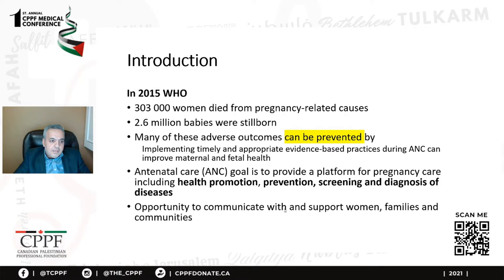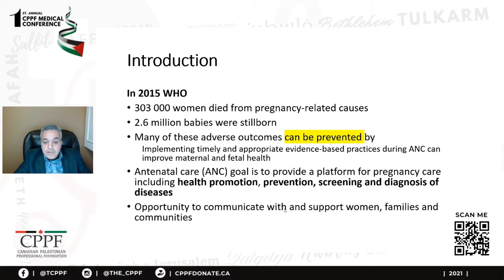Why it's important to have antenatal care. In 2015, the WHO published very concerning data about pregnancy outcomes. More than 300,000 women died from pregnancy-related causes. More importantly, 2.6 million babies were stillborn. Reviewing these cases, many of these adverse outcomes could be prevented by providing timely and evidence-based antenatal care. The goal of antenatal care is to provide health promotion, prevention of bad outcomes, screening and diagnosis of disease, and it's also a big opportunity to communicate with women, families, and communities.